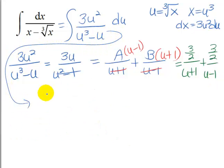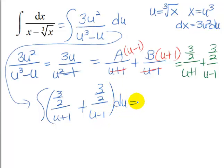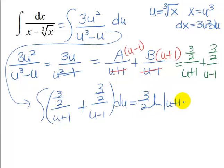So we're going to have the integral of 3 halves over u plus 1 plus 3 halves over u minus 1 du. So that's going to be 3 halves ln of u plus 1 plus 3 halves ln of u minus 1 plus a constant.